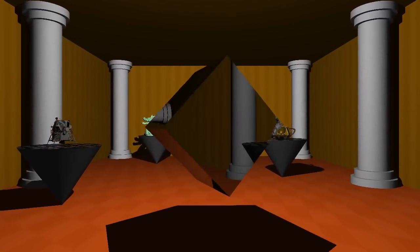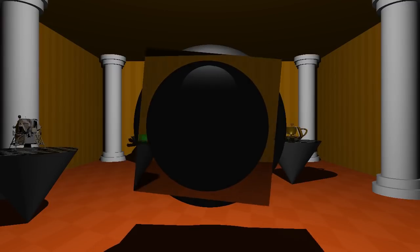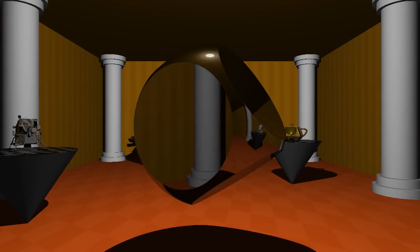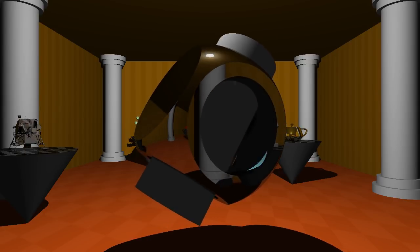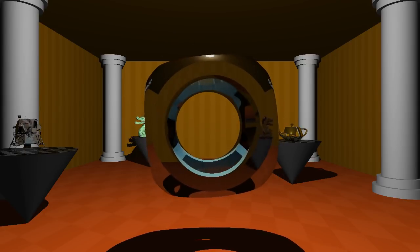Using constructive solid geometry, intersect it with a sphere to round the corners. Drill a hole through it by subtracting a cylinder. Do it again, and again, and wait.